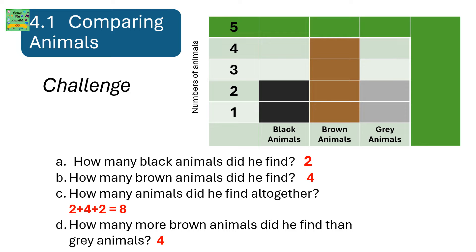4.1 Comparing Animals. Challenge. This is a block graph showing the number of animals. There are black, brown and grey animals. The question is: how many black animals did he find? He found two black animals. We can see that there are two black animals in the block graph marked.